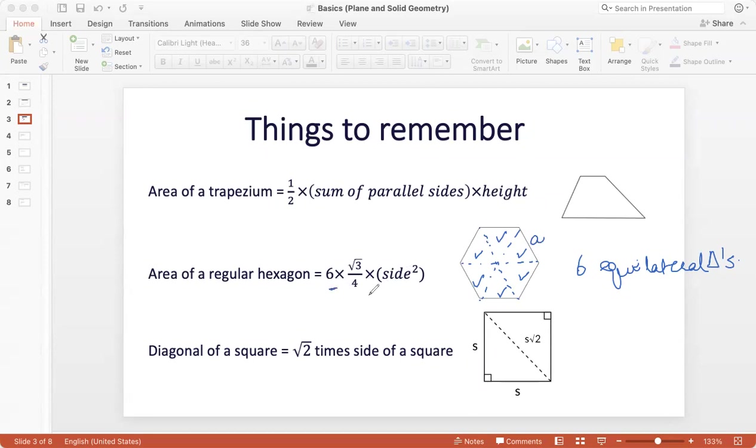So if the side of the regular hexagon is A, the area is six times the area of one equilateral triangle. And we know that the area of an equilateral triangle of side A is given by root 3 by 4 A squared. So the area of a regular hexagon of side A is given as six times root 3 by 4 into A squared or side squared.